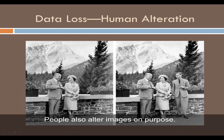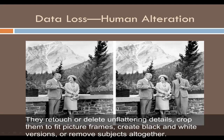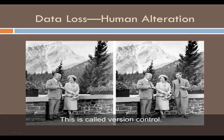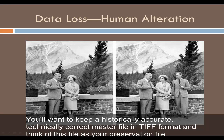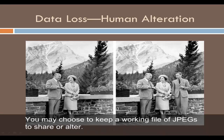People also alter images on purpose. They retouch or delete unflattering details, crop them to fit picture frames, create black and white versions, or remove subjects altogether. This is called version control. How will you recognize the better or more accurate version of an original photograph? You'll want to keep a historically accurate, technically correct master file in TIFF format, and think of this file as your preservation file. You may choose to keep a working file of JPEGs to share or alter.